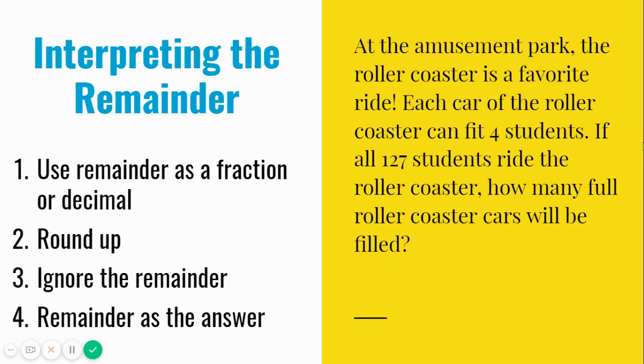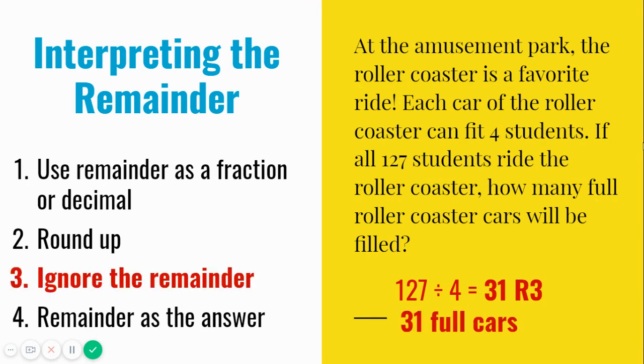Let's try another one. At the amusement park, the roller coaster is a favorite ride. Each car of the roller coaster can fit 4 students. If all 127 ride the roller coaster, how many full roller coaster cars will be filled? If 127 students are divided into 4 students per roller coaster car, that means there will be 31 cars filled, with 3 students left over in the last car. In this case, the remainder isn't going to be useful to us, because we need the full roller coaster cars. Therefore, the answer is 31 full cars, and we ignore the remainder of 3.